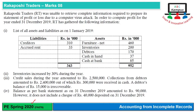Rakaposhi Traders was unable to retrieve complete information required to prepare its statement of profit or loss due to a computer virus attack. In order to compute profit for the year ended 31 December 2019, RT has gathered the following information.